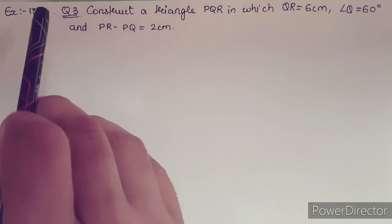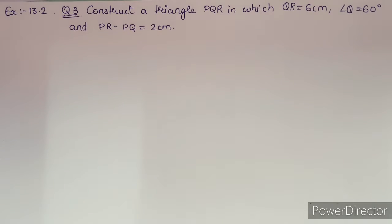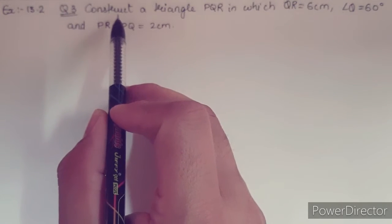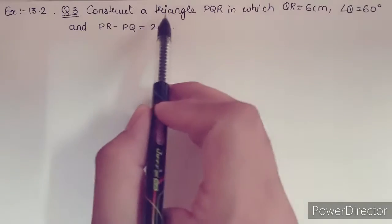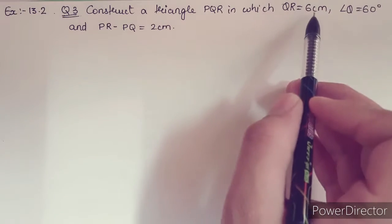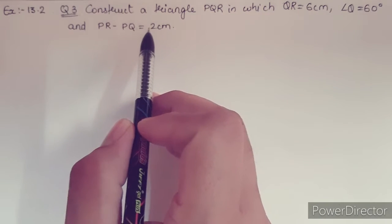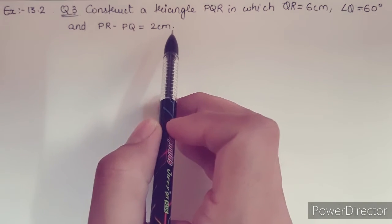Hello students, in this video we are going to solve question number 3 from exercise 13.2, that is construction. As the question says, construct a triangle PQR in which QR is 6 cm, angle Q is 60 degrees, and PR minus PQ equals 2 cm.